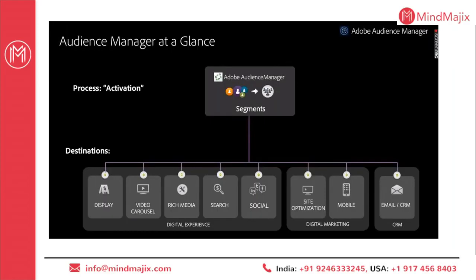Once we have created segments, we need to activate those segments on different platforms. These platforms are termed as 'destinations' in Audience Manager terminology. For example, to activate a segment for display, I link with that display platform to share segments for a display campaign. Similarly, segments can be shared for social, as well as for on-site personalization using Adobe Target or other tools, or sent to any CRM or email system. The current siloed state means the CMS system, analytics, and CRM system all have different user IDs, so the targeting does not provide a consistent experience to the customer.